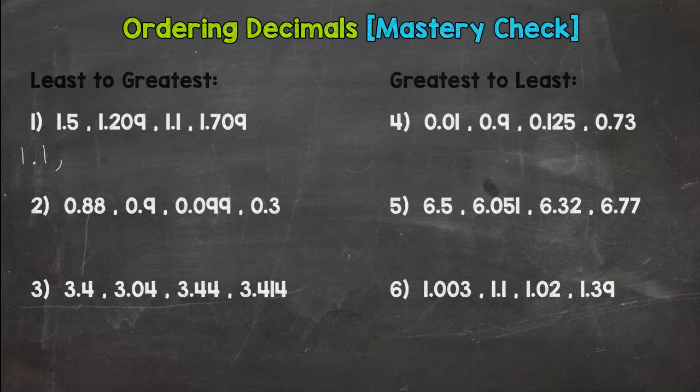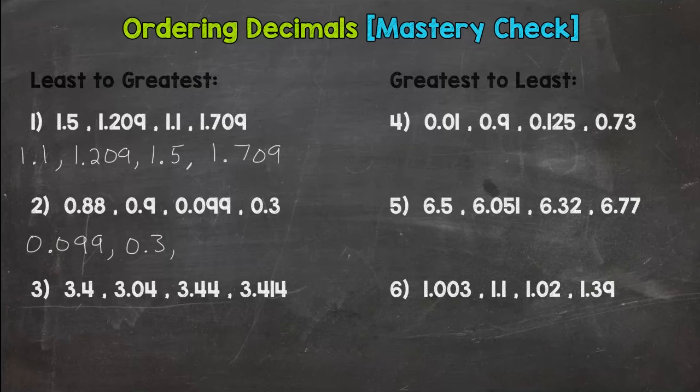Next, 1.209, then 1.5, and 1.709. Number two, 0.099 is our least in value, then 0.3, then 0.88.